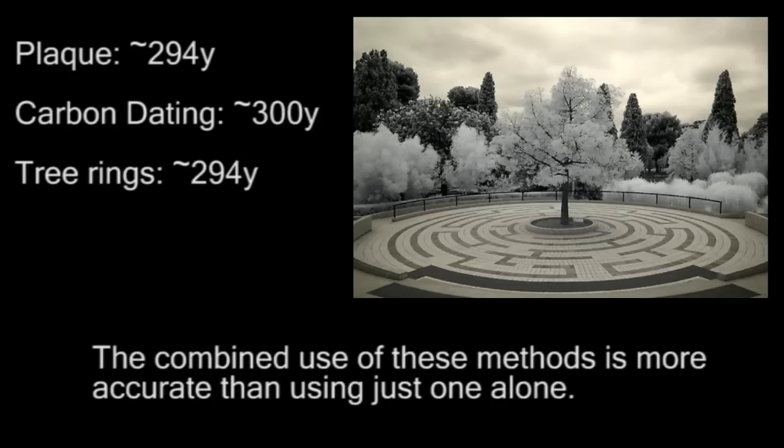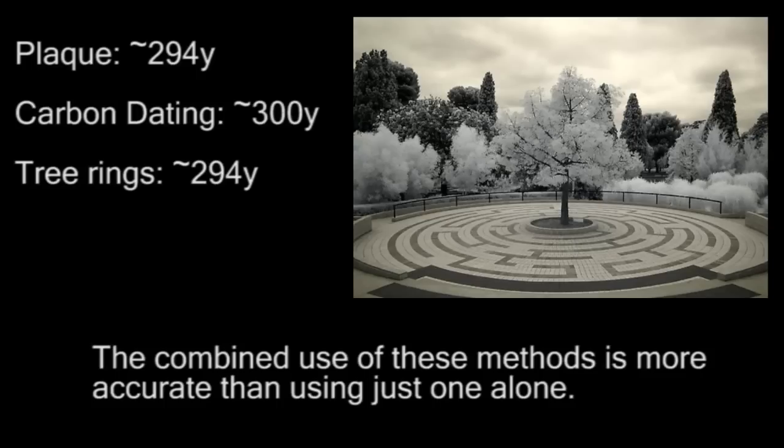Finally, let's look at dendrochronology — using tree rings to date it. This independent method arrives at the tree being 294 to 295 years old, thus validating yet again that the tree was planted in roughly 1705. The point is that with each independent method of data collection yielding a matching result, the higher the probability of accuracy becomes.